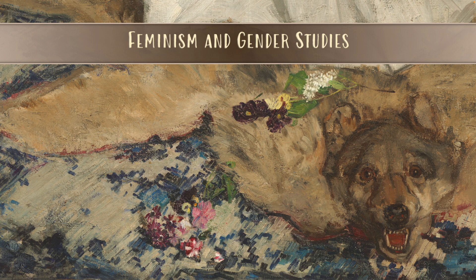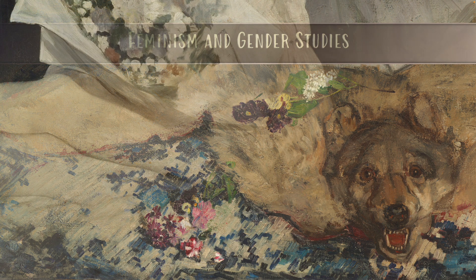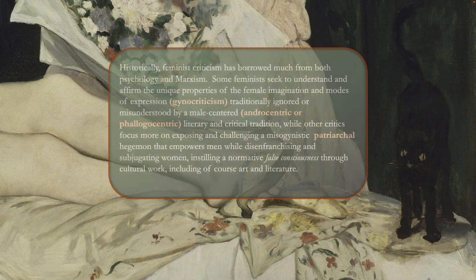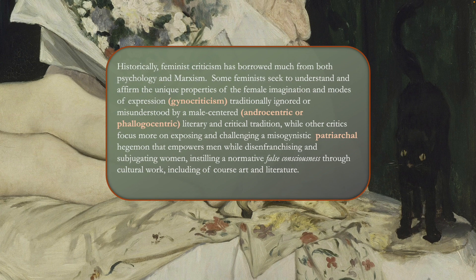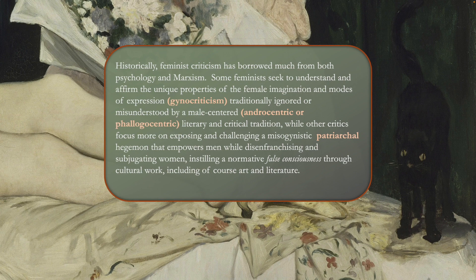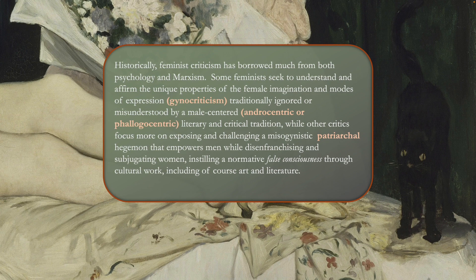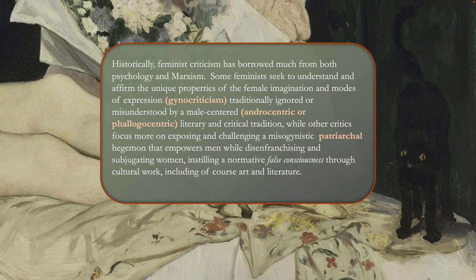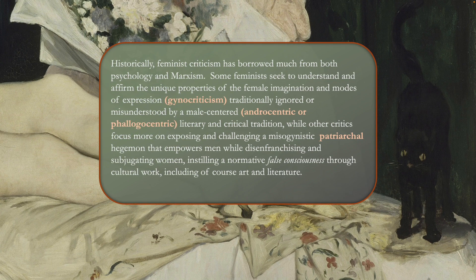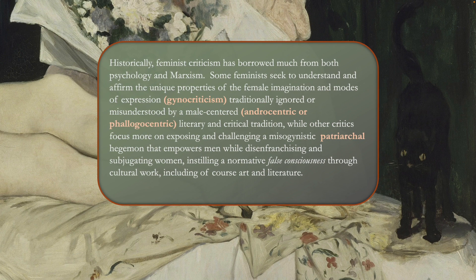I'm also going to introduce you to some writers and books that are not mentioned in chapter six. So we'll start by talking generally about feminism. Historically, feminist criticism has borrowed a great deal from psychology and Marxism, and there are basically two strains that we're going to look at.